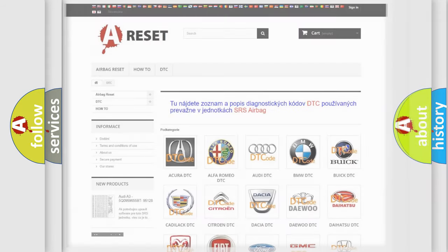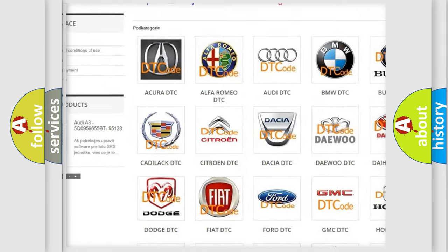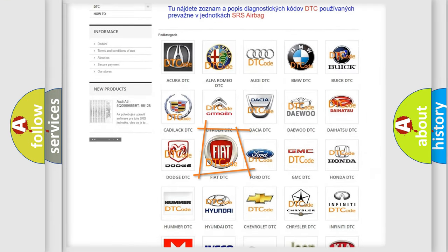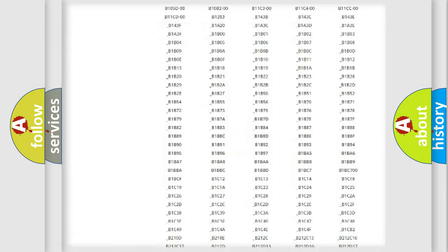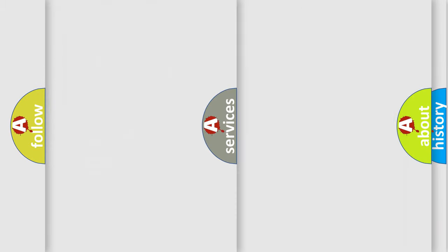Our website airbagreset.sk produces useful videos for you. You do not have to go through the OBD2 protocol anymore to know how to troubleshoot any car breakdown. You will find all the diagnostic codes that can be diagnosed in Fiat vehicles, and also many other useful things.